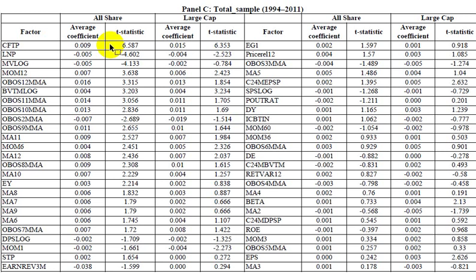To do this, they set up a univariate regression for each of the commonly used factors in previous studies. These factors may be related to value — for instance, cash flow to price — size, such as market value, or momentum, such as the 12-month previous return momentum.